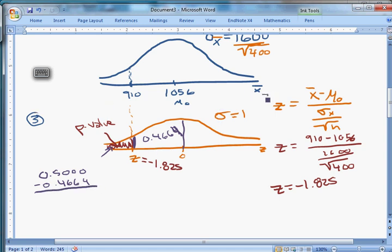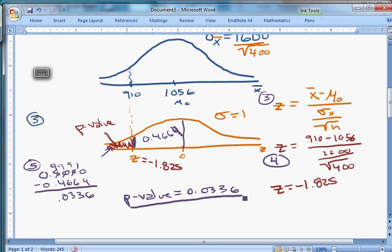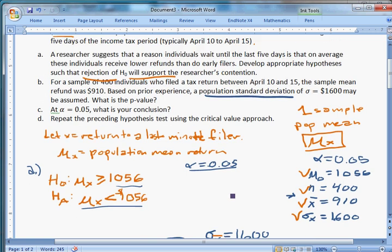So we take 0.5000 minus 0.4664. This was step 3. This was step 4. Right now we're moving on to step 5. We subtract this. We have 10, 9, 9, 4, 0, 3, 3, 6. And that's our p-value. P-value equals 0.0336. How do we interpret that? Well, that's saying that the chance that we would get a sample of $910, if the true population mean was $1,056 is about 3%. So that's part B. What is the p-value? 3.36%.